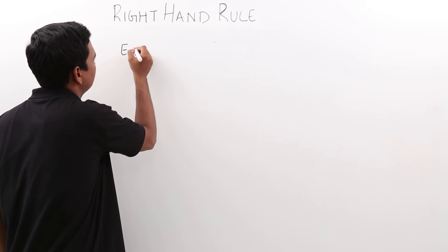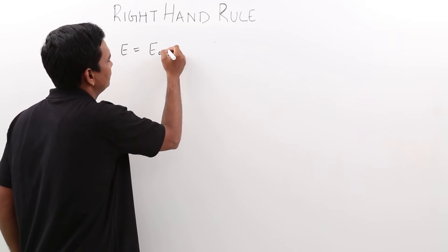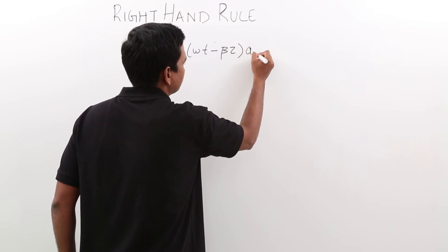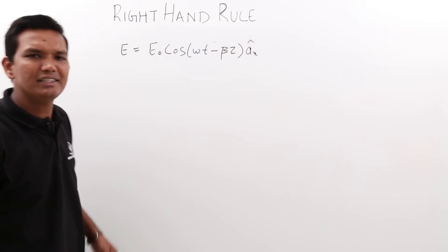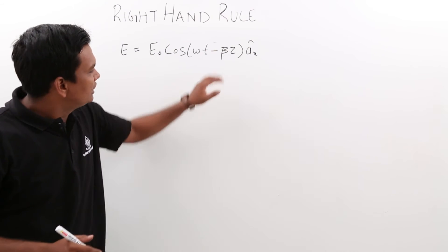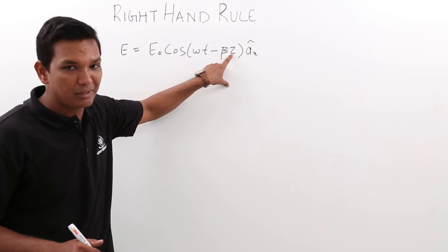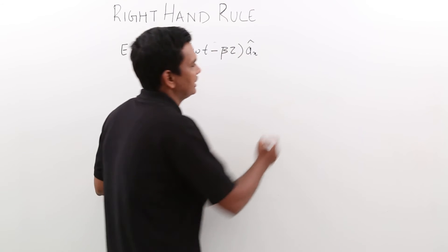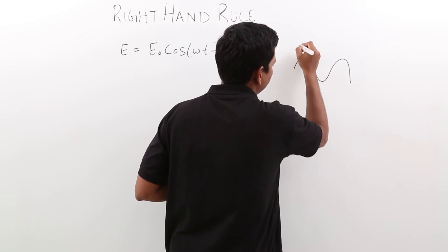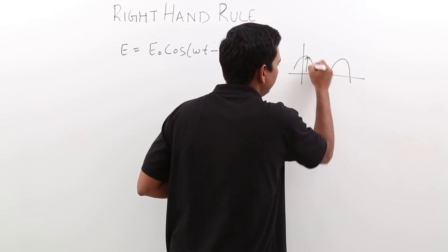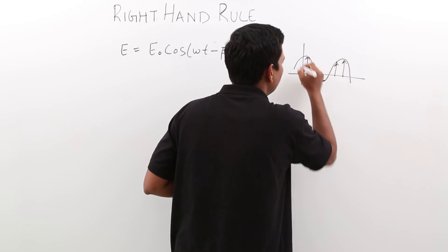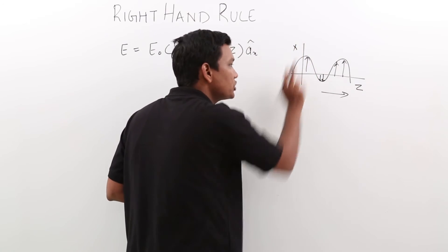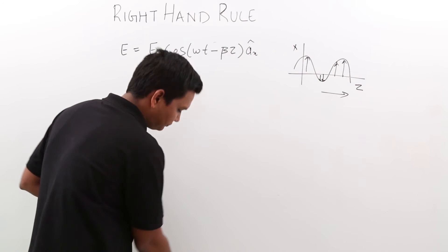Let me take a simple wave with the very common equation: E = E₀ cos(ωt − βz) â_x. This is a simple equation we have already seen in previous videos. The wave is propagating in the plus z direction, and the variation of the electric field is along the x direction. So the wave is travelling along z, while the electric field component varies along the x-axis.